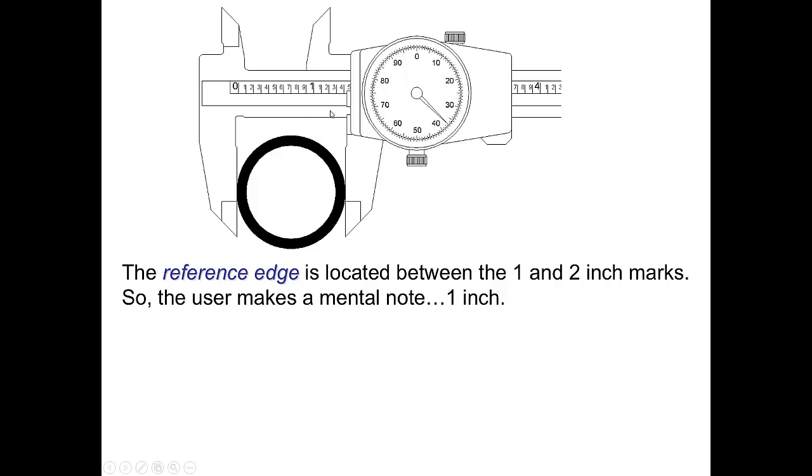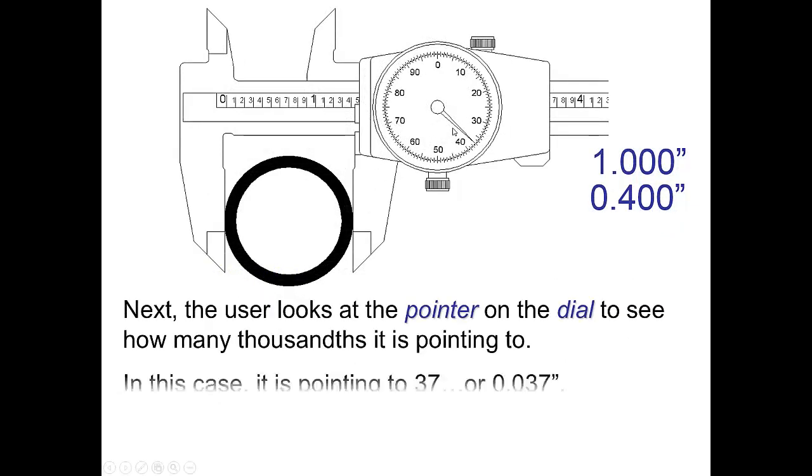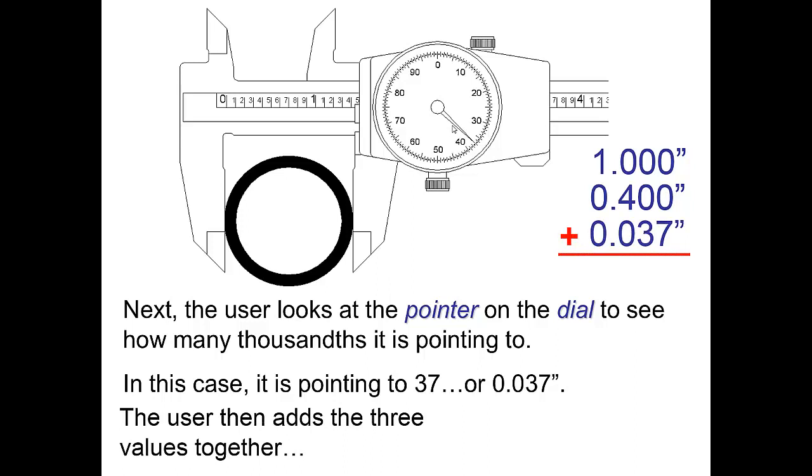So in this example I'm looking here and I see that I can see one. So it's one inch point and I come over here and I see four. So that's four tenths of an inch. And now I go to the dial and it looks to me like the dial is sitting on thirty seven. There's a closer view for you. So to read this it would be one point four three seven inches.